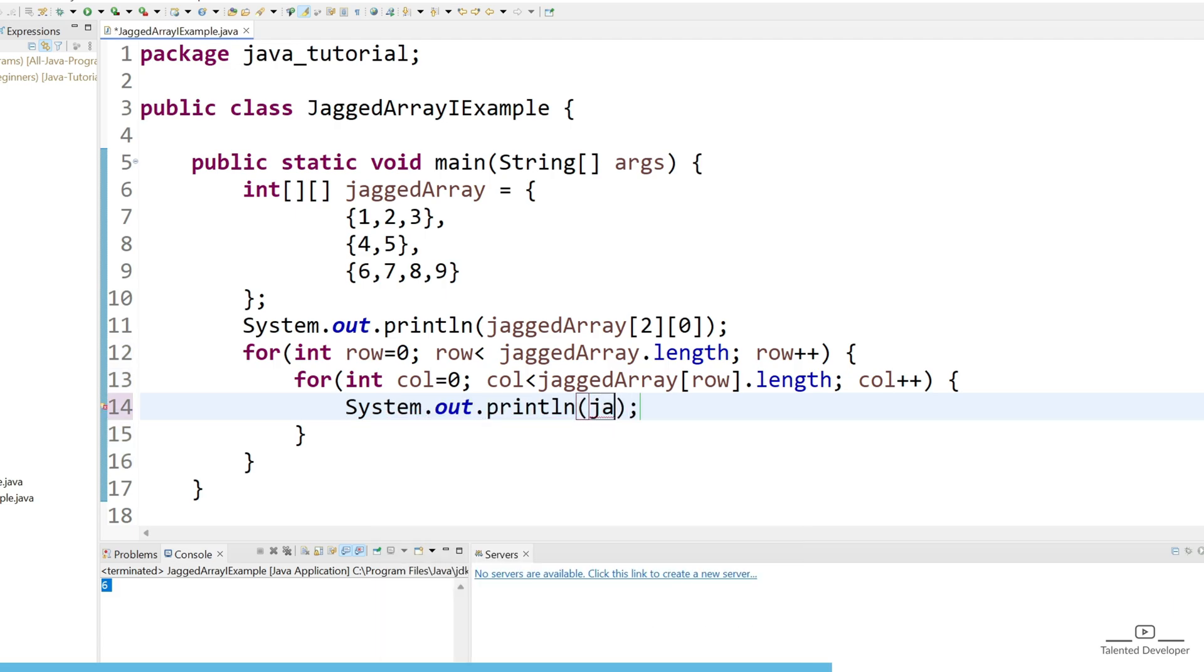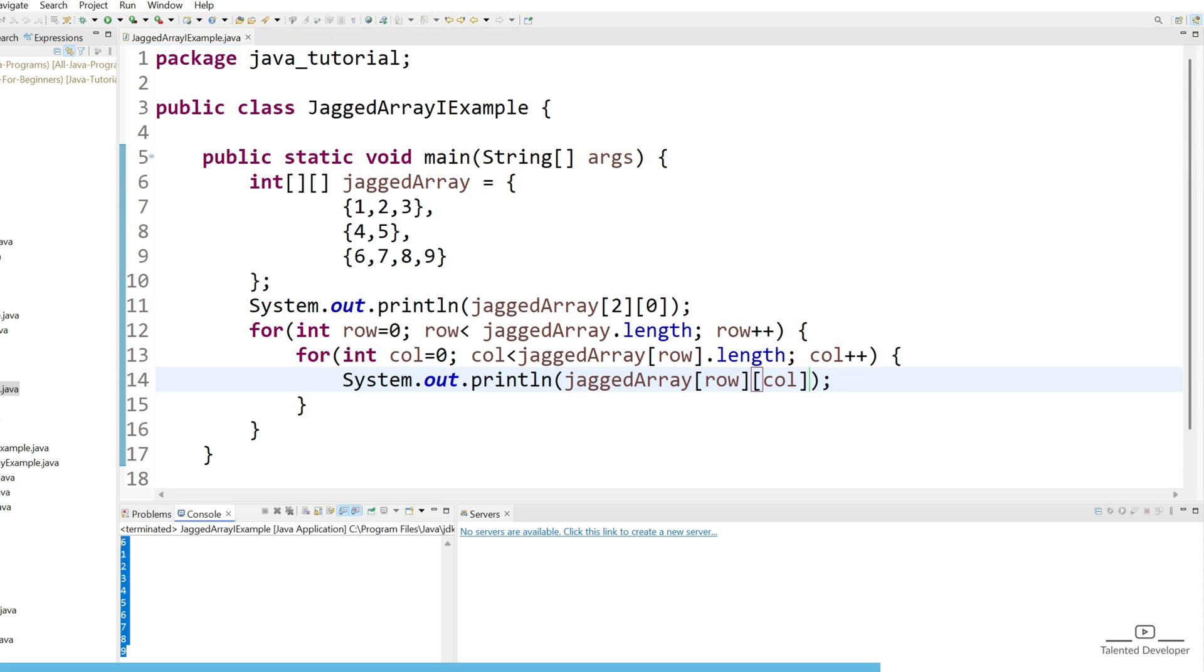If you have doubt about what I'm doing, please watch the multi-dimensional array video. Your doubts will be clear where I've explained in depth and detail. Now if I run, it will give me data as one line. Let's comment this one and remove println, just use System.out.